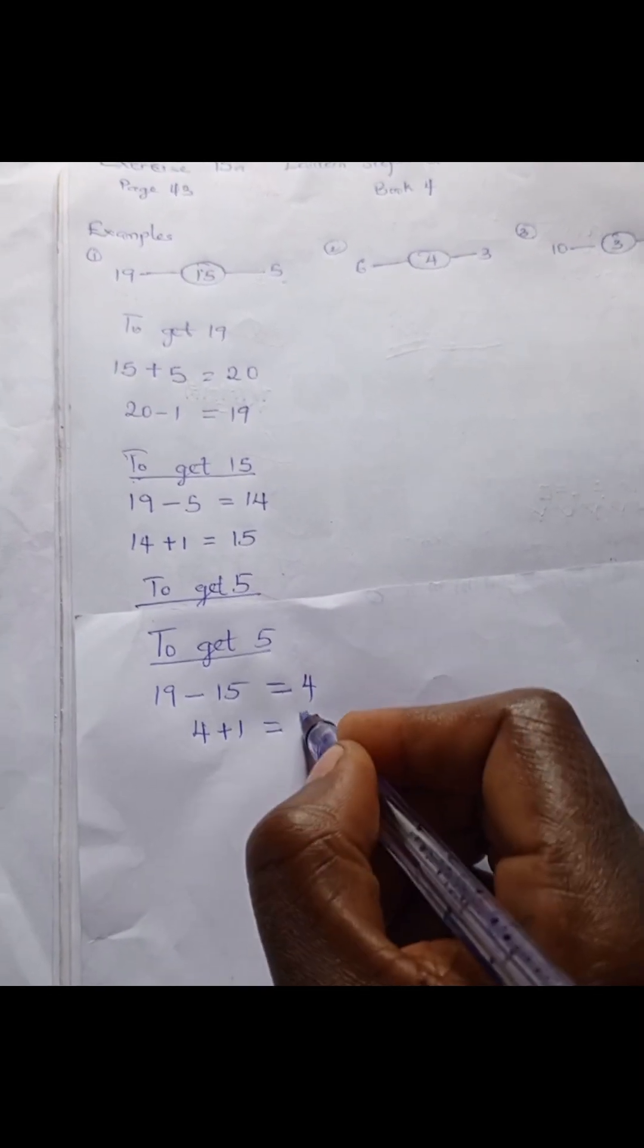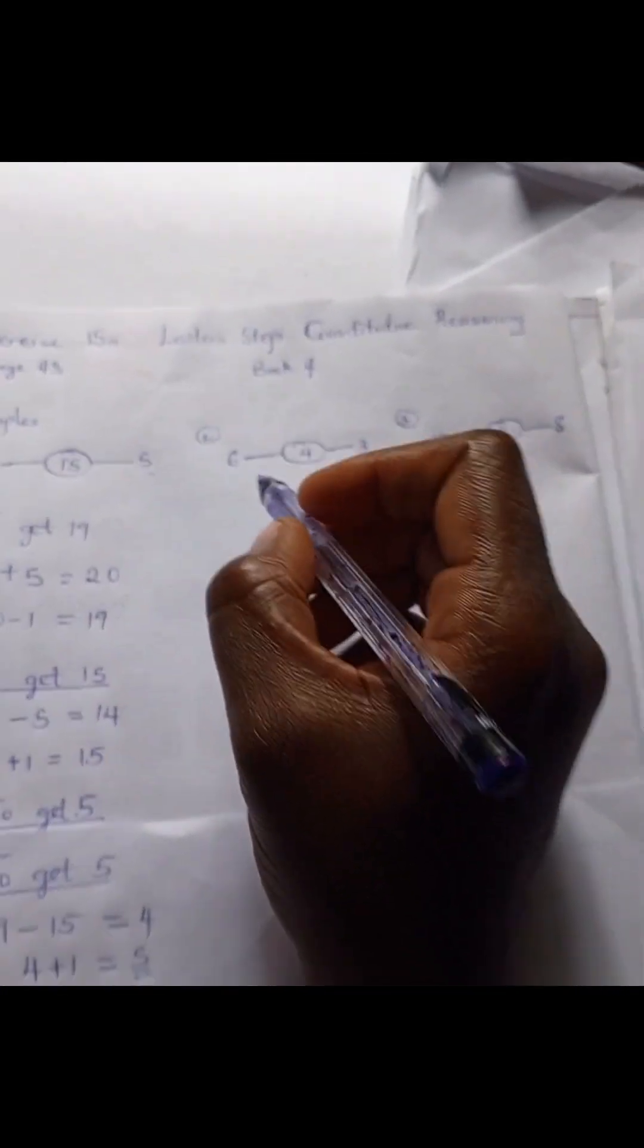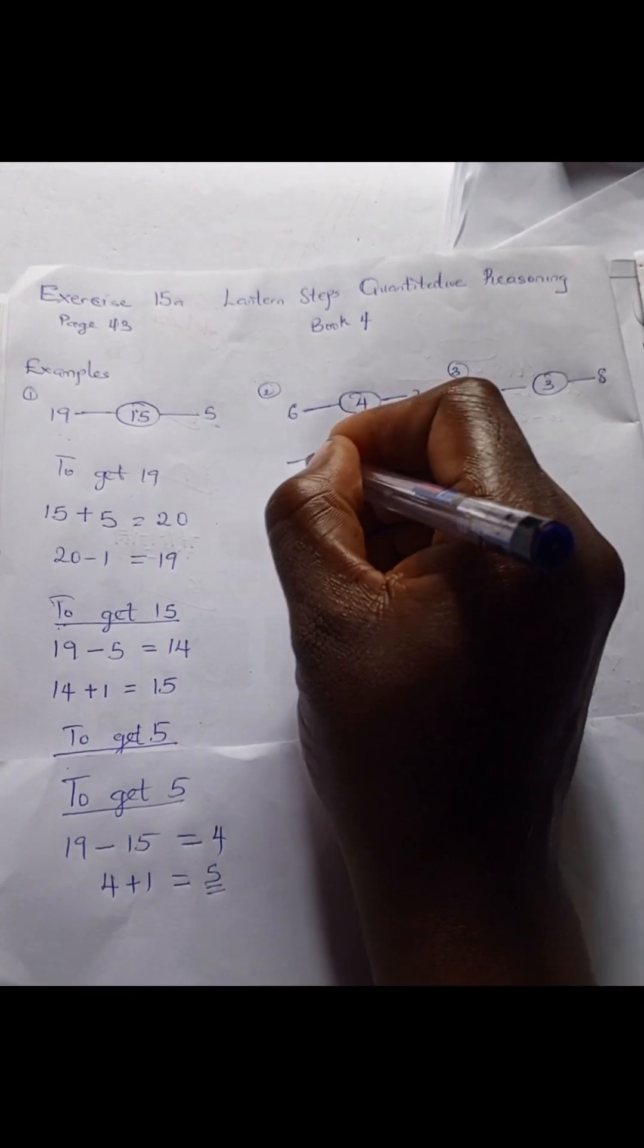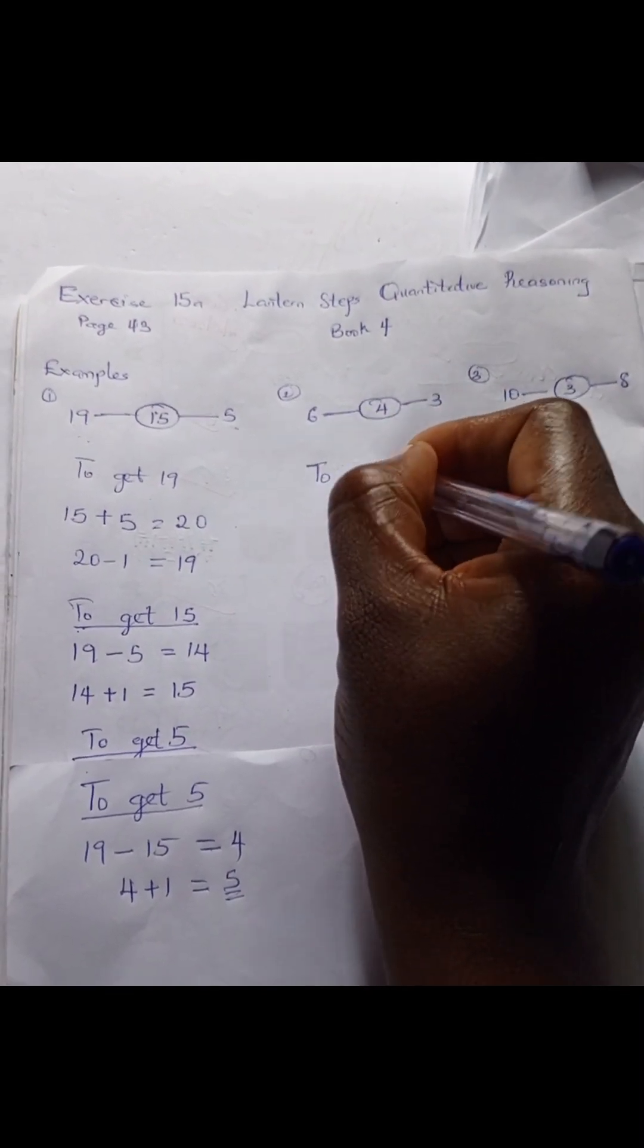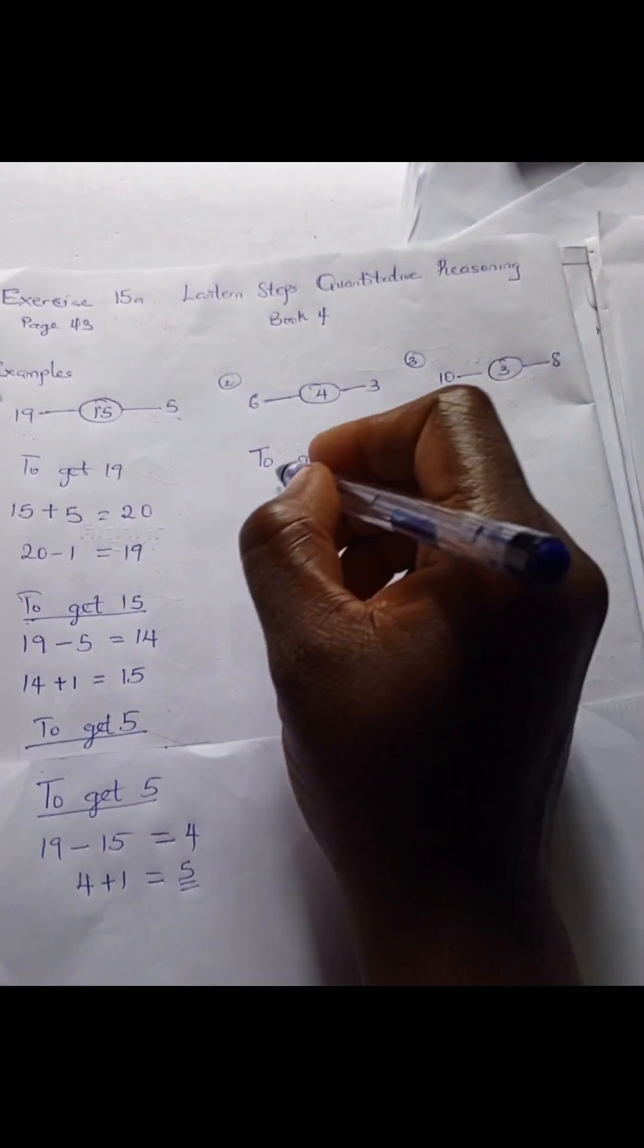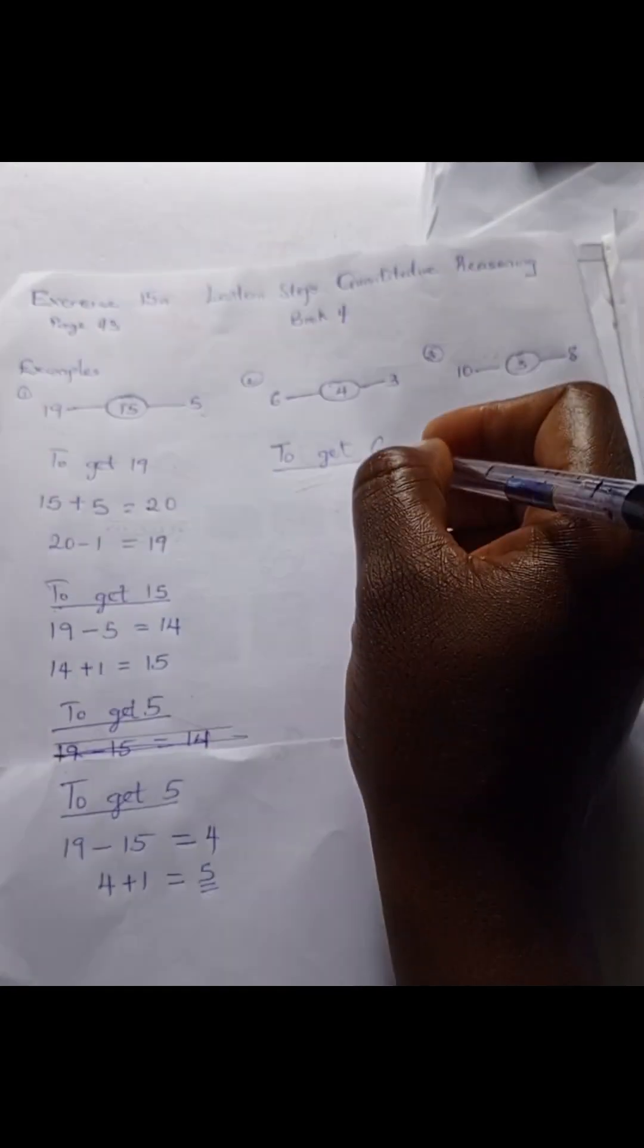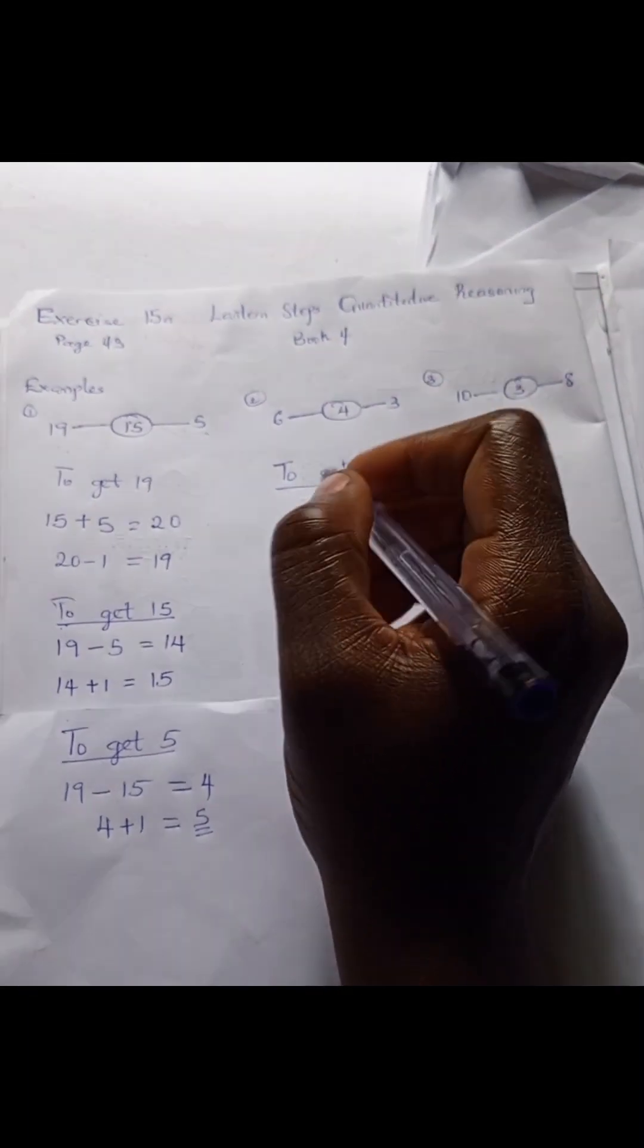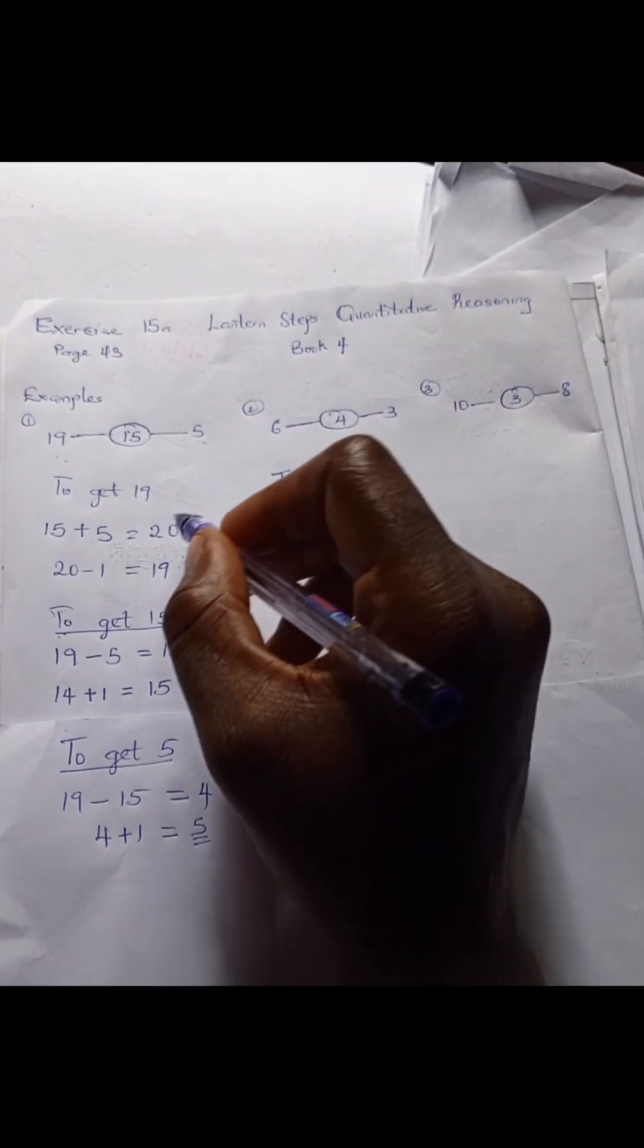Let's look at this other example and see if the initial pattern will work. For 19 here, we have 6. To get 6, we have...